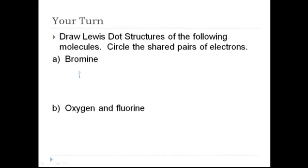Let's look at bromine first. If you find bromine on the periodic table, you can see that it has seven valence electrons. So all bromine has to do to get a full valence shell is find another one of itself that also has seven valence electrons, and it's just going to share one pair with the other one. Now each one of those has eight.